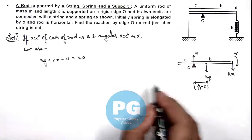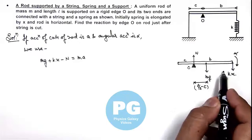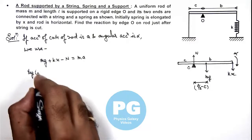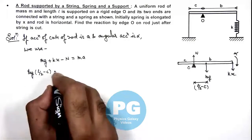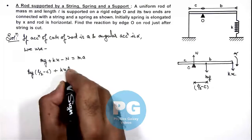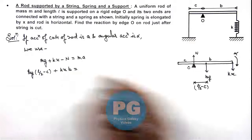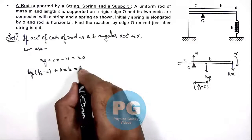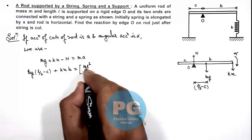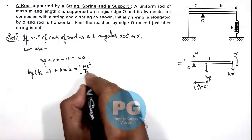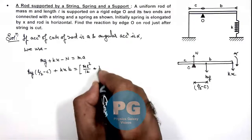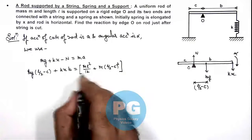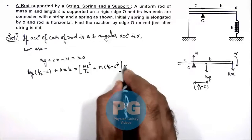And for its rotational motion the torque will be due to mg and kx, so it can be given as mg multiplied by l by 2 minus c plus kx multiplied by b is equal to I alpha. And moment of inertia about this point we can write as, about center it is ml square by 12 plus m multiplied by l by 2 minus c whole square. With parallel axis theorem we have calculated its moment of inertia multiplied by alpha.